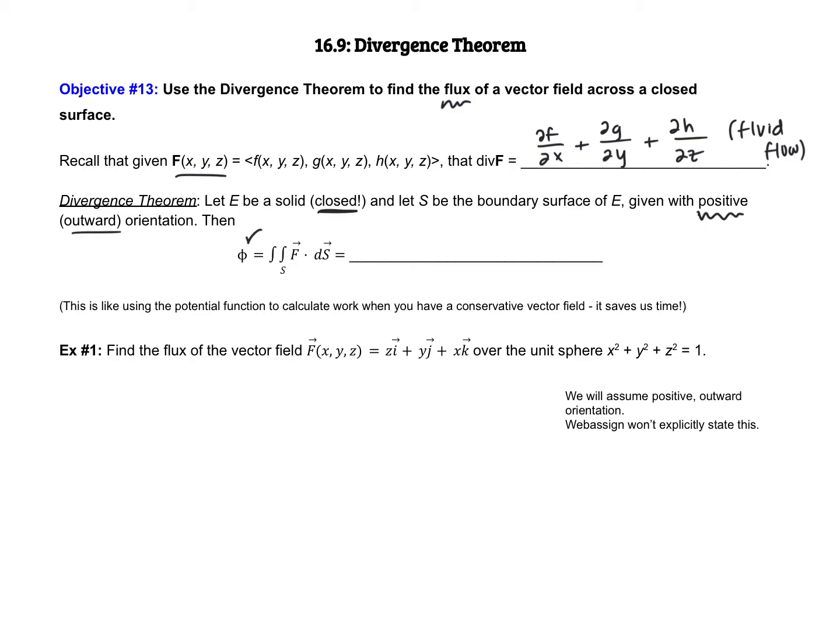Then, this symbol, if you remember, is flux. The first way we calculated flux, or really the only way, is surface integral of f dot dS. What the divergence theorem tells us is that if E is a closed solid, and if the boundary surface has a positive orientation, then to calculate flux, we can do the triple integral over that region E of divergence of f dV.